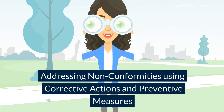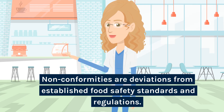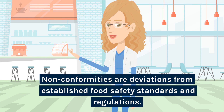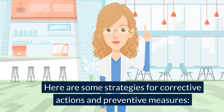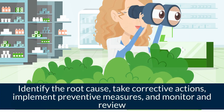Addressing non-conformities using corrective actions and preventive measures. Non-conformities are deviations from established food safety standards and regulations. Here are some strategies for corrective actions and preventive measures: identify the root cause, take corrective actions, implement preventive measures, and monitor and review.